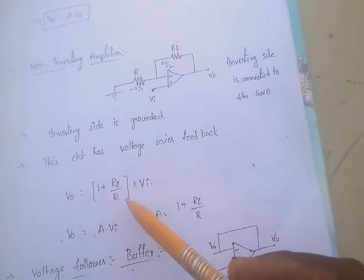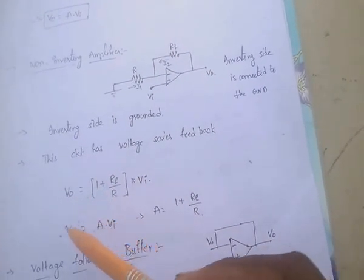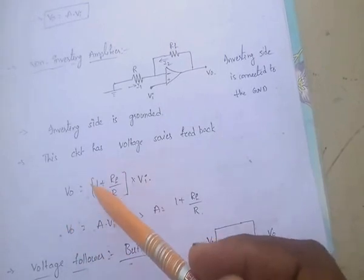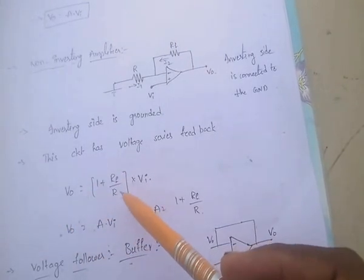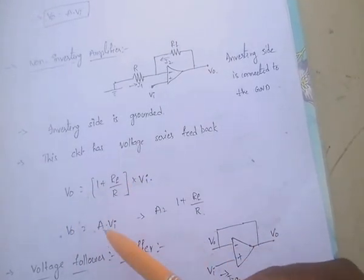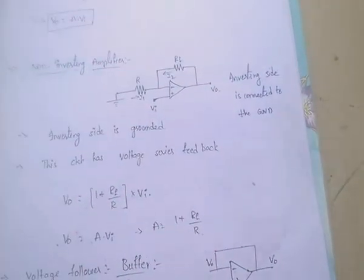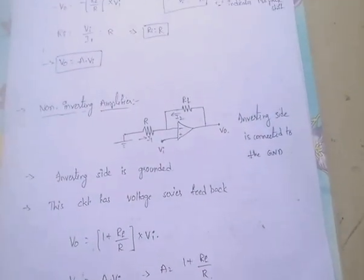Here, 1 plus RF by R is nothing but A. So if we replace 1 plus RF by R with A, V0 equals A into Vi.